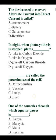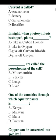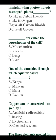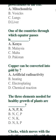The device used to convert alternating current into direct current is called a rectifier. At night, when photosynthesis stops, plants give off carbon dioxide. The powerhouse of the cell is the mitochondria. One of the countries through which the equator passes is Kenya. Copper can be converted into gold by artificial radioactivity. The three elements needed for the healthy growth of plants are nitrogen, phosphorus, and potassium.